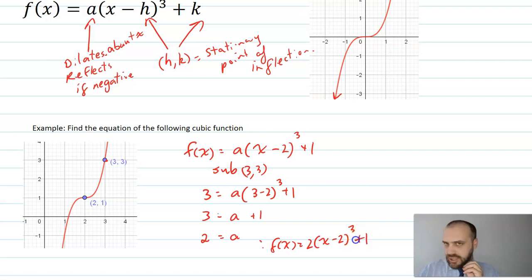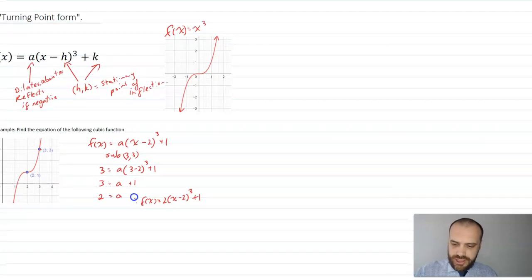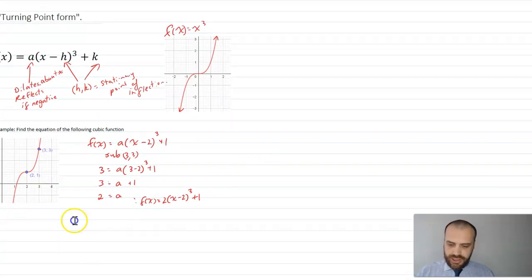Exactly the same process as how you would find the equation of a quadratic, if you saw its turning point and one other point. That is cubics in turning point form. It's definitely not turning point form, there's no turning point, but it feels a lot like a cubic in turning point form.